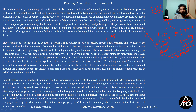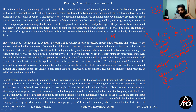For many years, antigens and antibodies dominated the thoughts of immunologists so completely that those immunologists overlooked certain difficulties. Perhaps the primary difficulty with the antigen-antibody explanation is the informational problem of how an antigen is recognized and how a structure exactly complementary to it is then synthesized. So the two problems are: first, how to identify; and second, how to make complementary products.